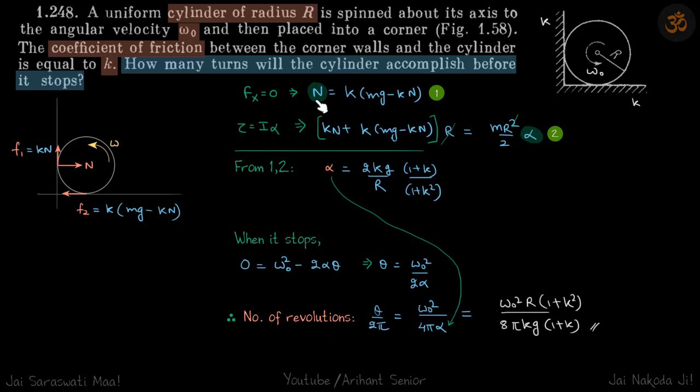So basically just two variables, N and alpha. So as discussed, we got rid of N by this equation and we got the value of alpha.